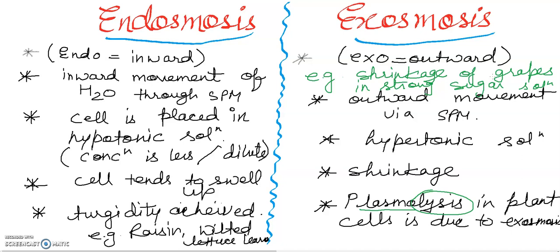तो friends, यह endosmosis and exosmosis का basic comparative chart आपको दिया है — इन points को remember करना होगा। एक additional point: जहाँ turgidity है वहाँ flaccidity achieve होगी exosmosis में — flaccid condition। आप अपना revision proper रखें क्योंकि ICC board के exams हो गए हैं और कभी भी हो सकते हैं। Keep your content revised, otherwise result achieve करने में successful नहीं हो पाएंगे।